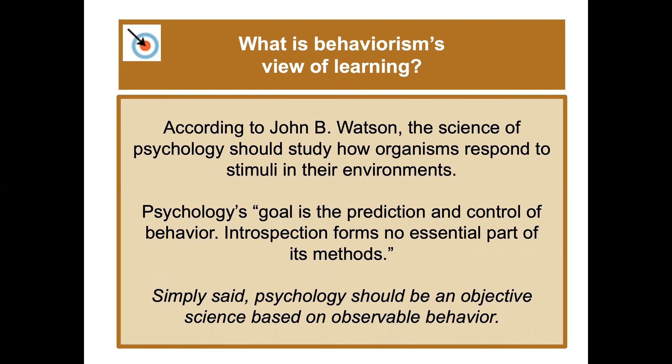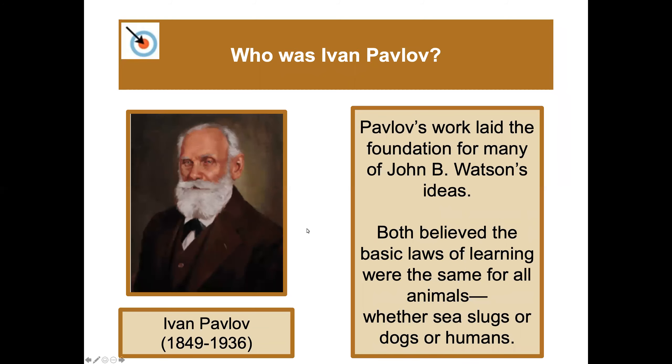Simply put, to Watson and other behaviorists, psychology should be an objective science based only on observable behavior. Behaviorists were not interested in what was going on inside what they called the 'black box' inside your brain — they didn't think that was anything we could ever figure out. They felt the entire focus of psychology should be on observable behavior.